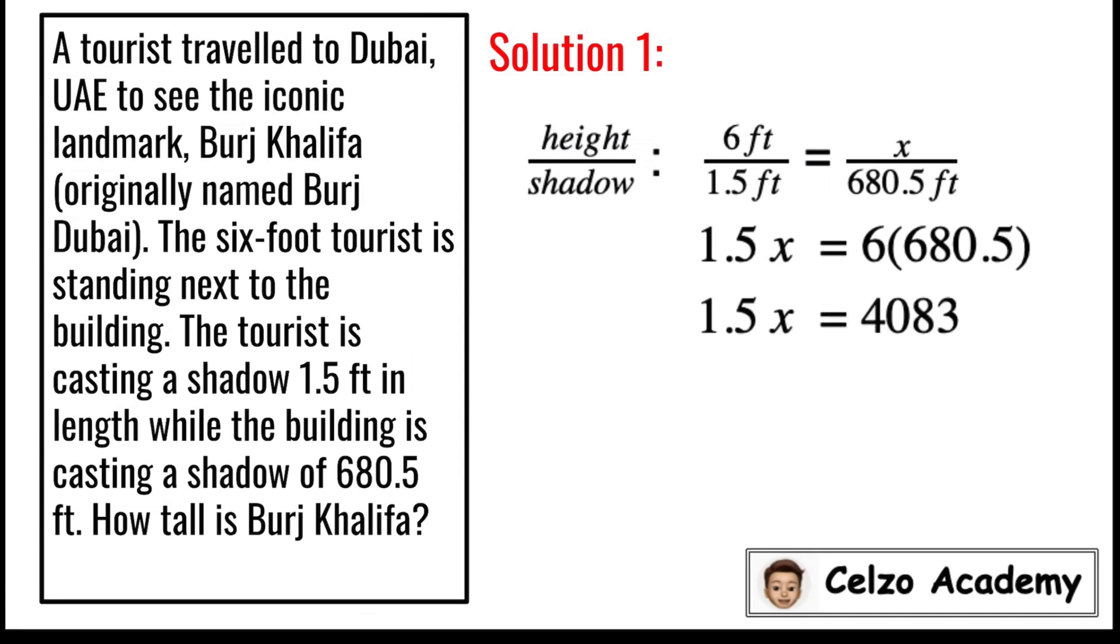Doing the inverse operations, we need to divide both sides by 1.5. 1.5 divided by 1.5 is 1, so we have 1x. And dividing 4083 by 1.5, the answer is 2722 feet. This is the actual height of Burj Khalifa in Dubai.